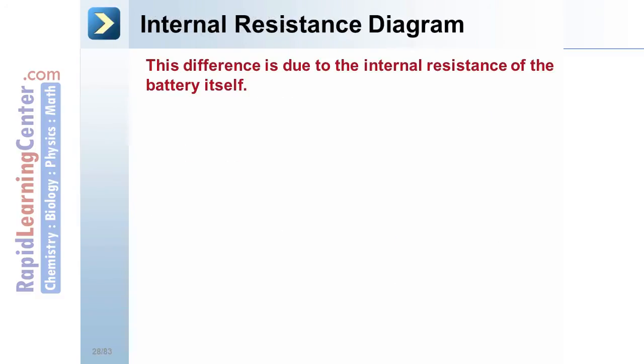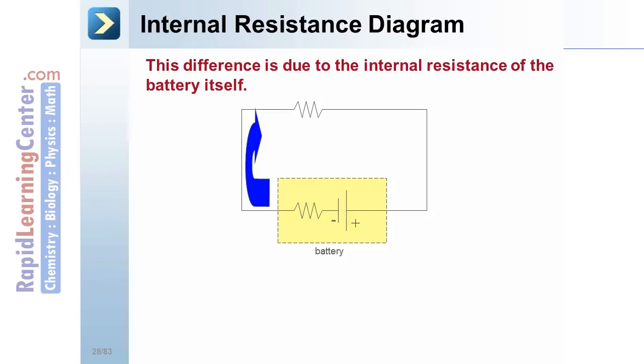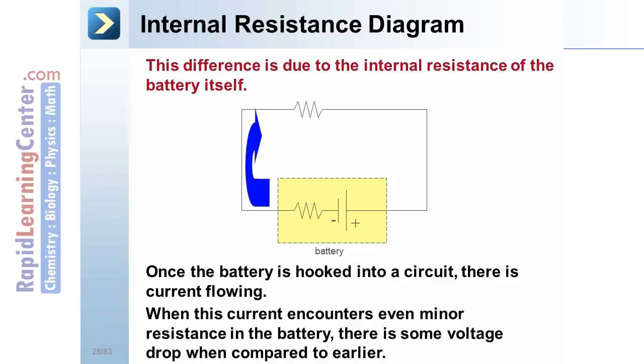Internal resistance diagram. This difference is due to the internal resistance of the battery itself. It's as if the battery contains an additional resistor. Once the battery is hooked into a circuit, there's current flowing. When this current encounters even minor resistance in the battery, there is some voltage drop when compared to earlier. This accounts for our difference in measurements.